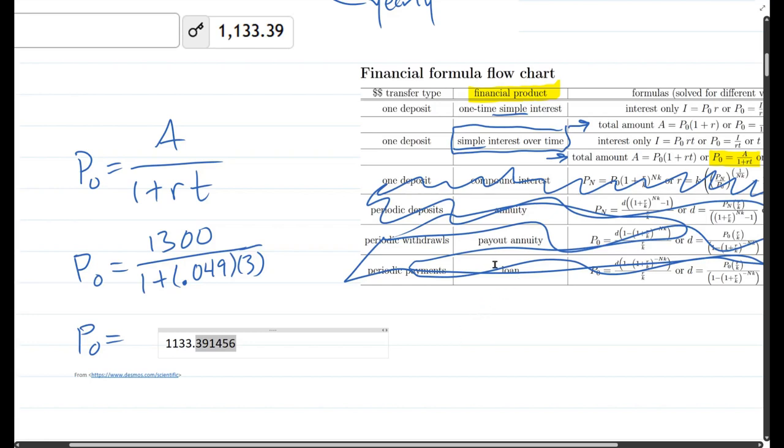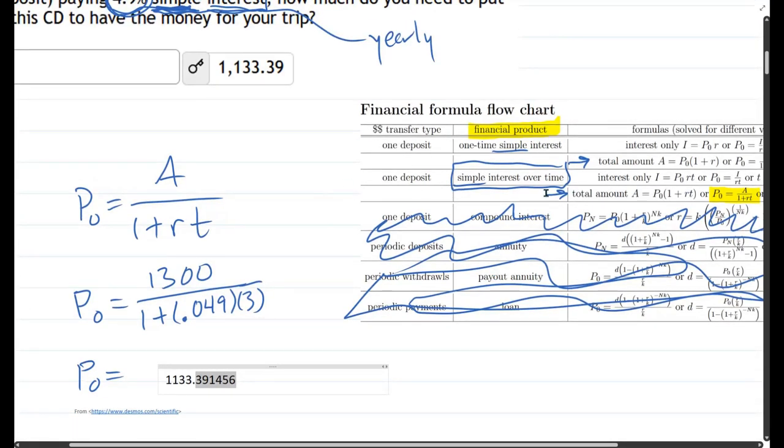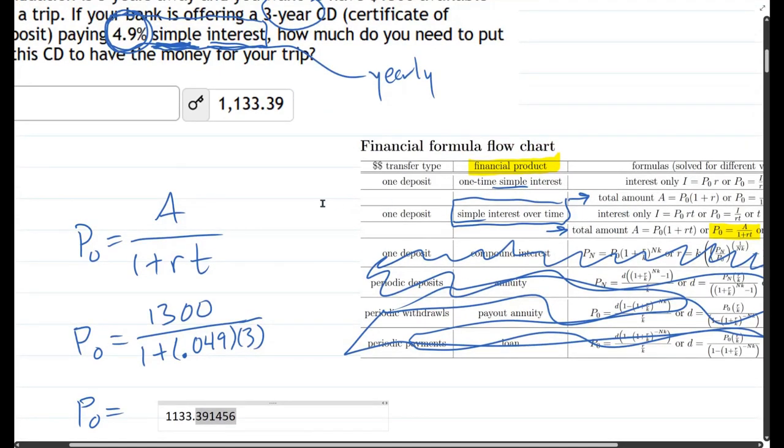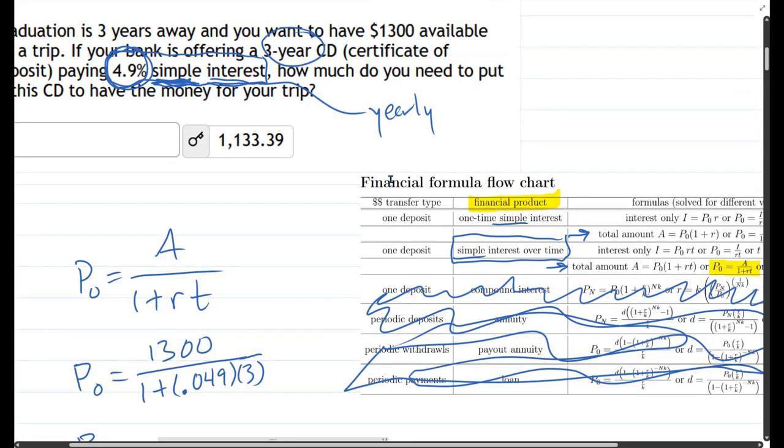All right, the tricky part of most of these questions is figuring out what row you're on. If it says simple interest you're in one of the first two options, and you just have to decide how many times interest would be computed. If it's a one-time computation you're right here, and if it's more than once then you're going to be down here. Just remember if the frequency of computing the interest is not stated, the default is once per year.